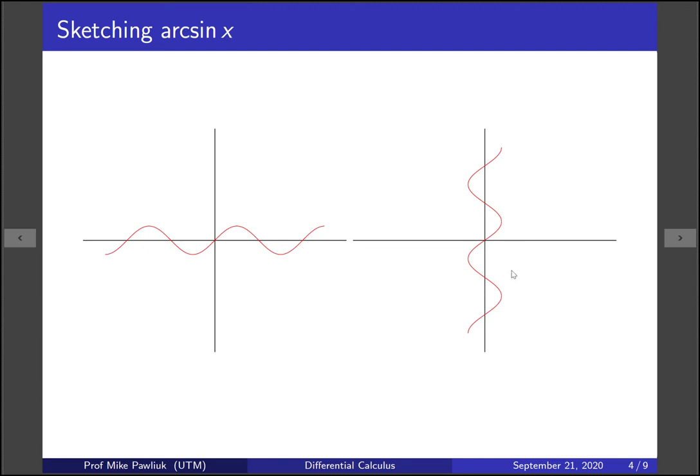So to do that, let's first look at, over here, where's a part that will pass the vertical line test. So one example of it would be to take this region right here. So if you take this box, everything inside of the box will pass the vertical line test. There are other boxes you could pick, and each of those would correspond to what's called a branch, a different branch of arcsine.